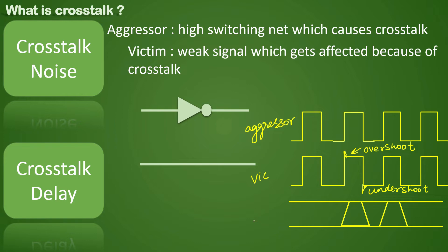These spikes represent overshoots and undershoots and are a type of glitch. There is also a third scenario where the victim net is also switching and the transition is going bad. In an ideal case the transition would be better, but as an example, the victim transition is comparatively bad — transition is getting affected here, causing delay.